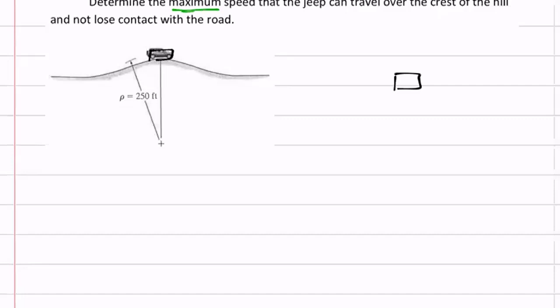Here's my car. I've got the weight of the car, mg. Is it speeding up or slowing down? I don't know. I might have some force of friction. If it's accelerating in the tangential direction, we may not even look at that direction, but there could be some force in that direction.